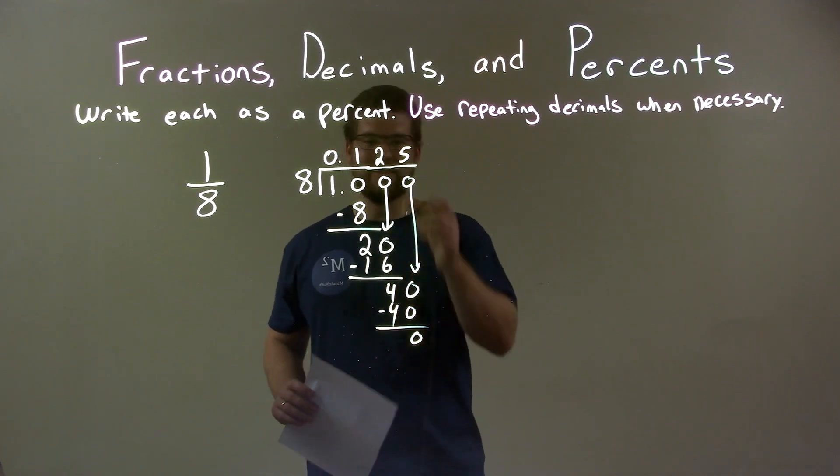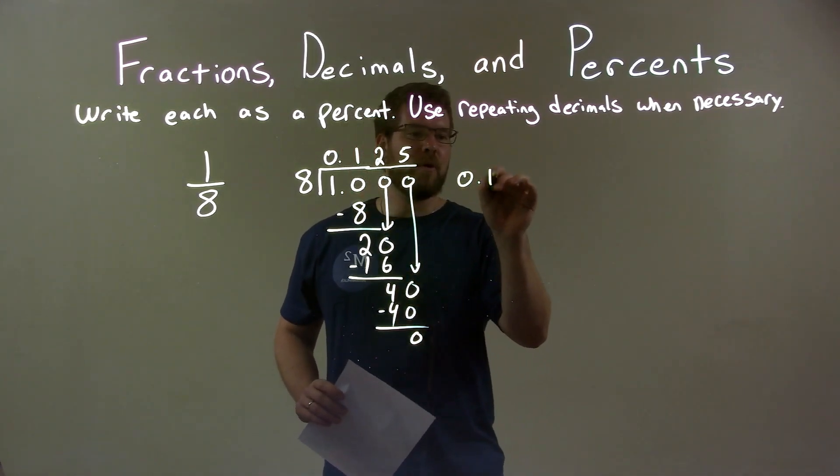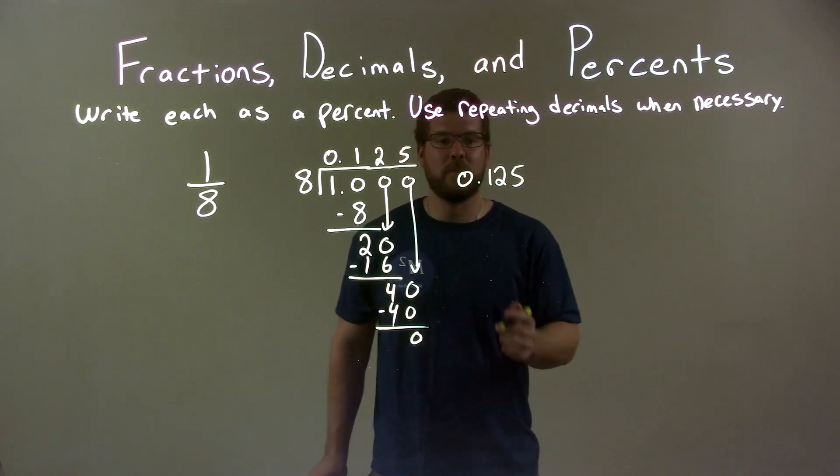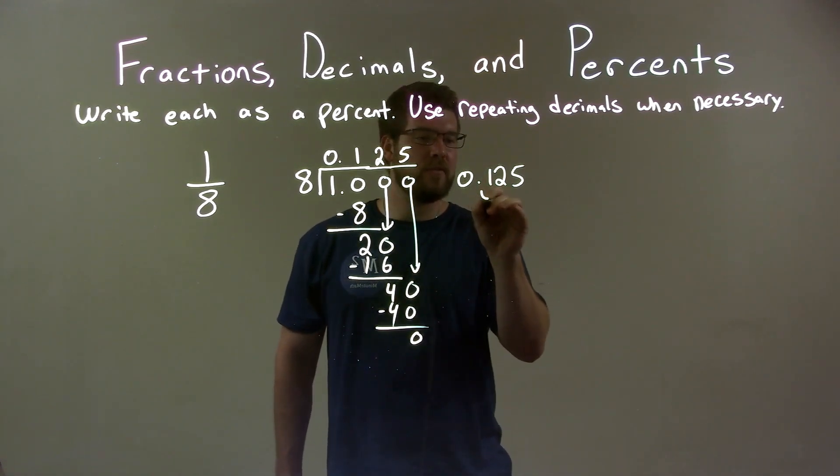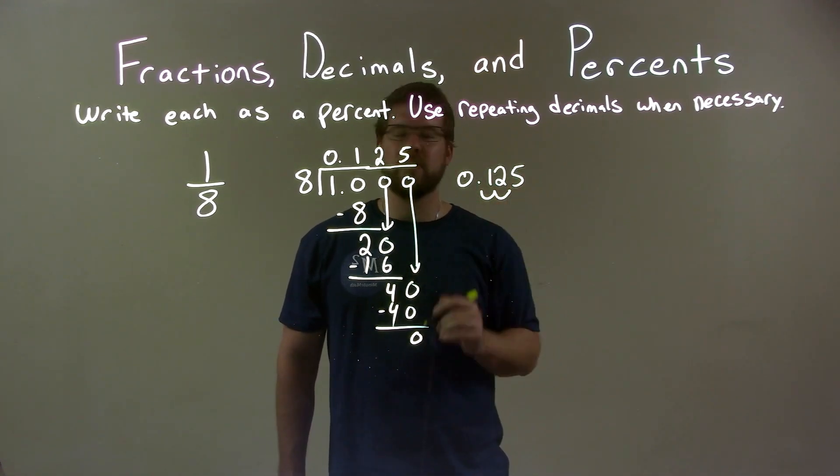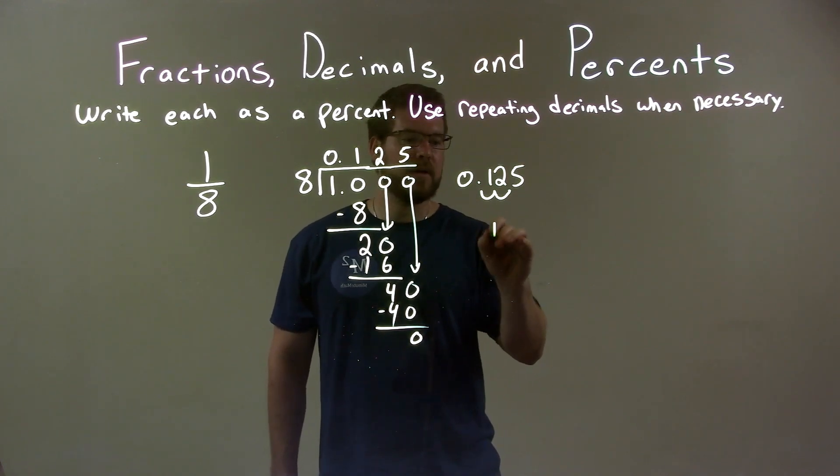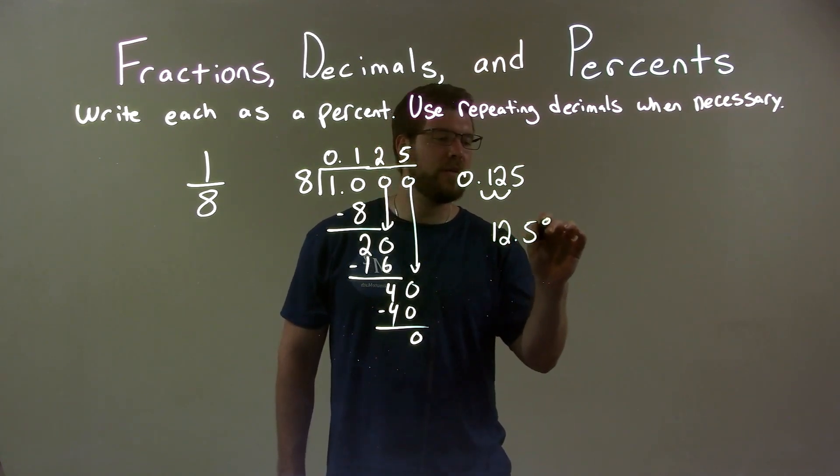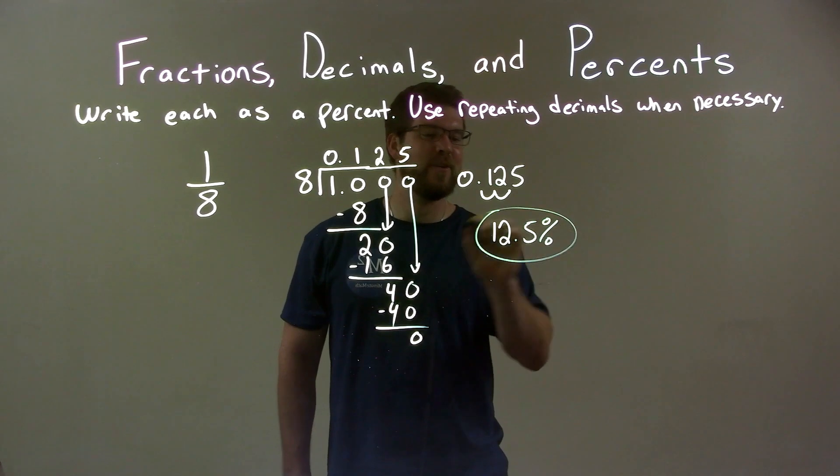Our decimal is 0.125. But to convert that to a percent, we move this decimal place two spots to the right. So 0.125 is the same thing as 12.5%, and there we have our final answer.